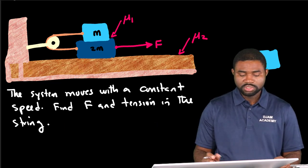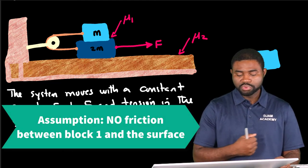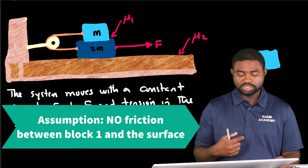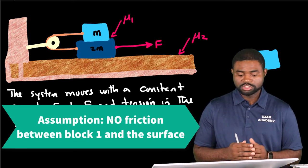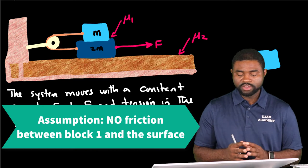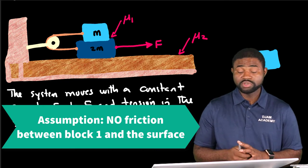Now the system, block one is pulled by a constant force F such that the system moves at constant speed. We need to find F and the tension in the string in terms of given variables.